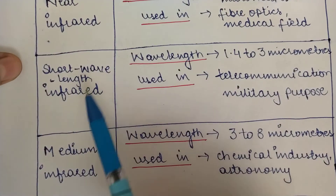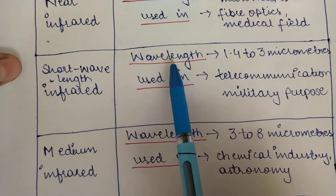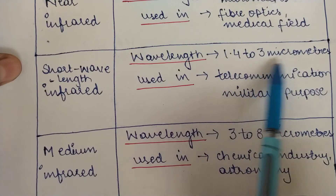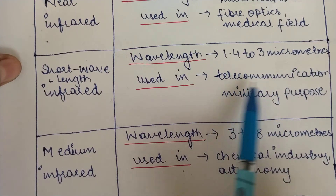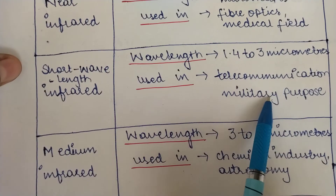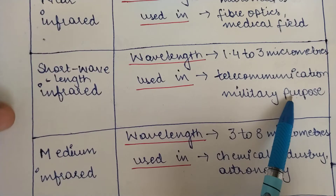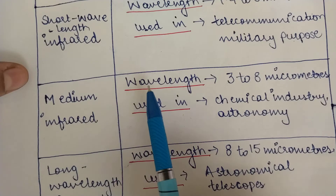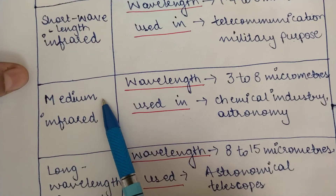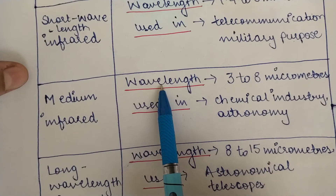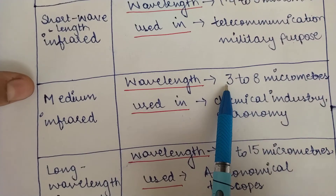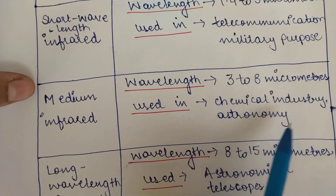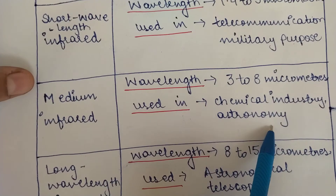The second is short wavelength infrared, with a wavelength between 1.4 to 3 micrometers, used mainly in telecommunication for military purposes. The third is medium infrared, with a wavelength ranging from 3 to 8 micrometers, used in chemical industries and for astronomical purposes.